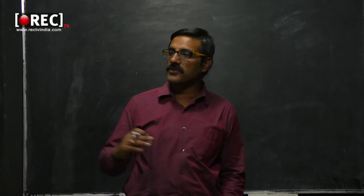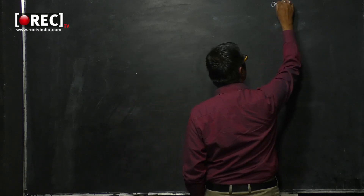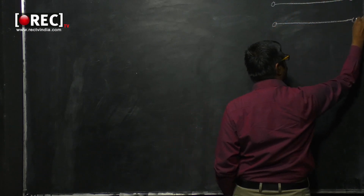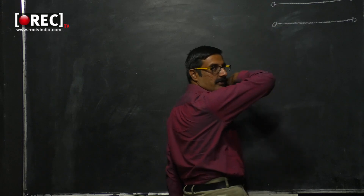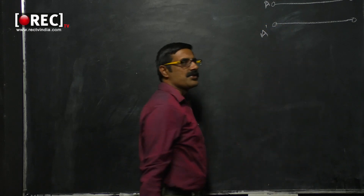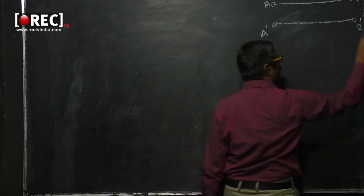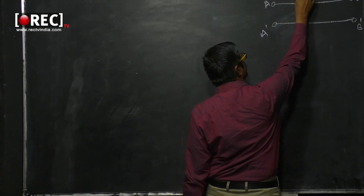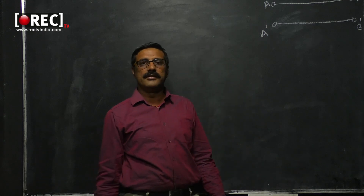Let us start the transmission line equations derivation. The schematic diagram of a transmission line will be like this. A transmission line can be viewed with this diagram — we have two terminals on the extreme left which are the input or source terminals, named AA'. The terminals AA' correspond to the input terminals of the TL and BB' correspond to the output terminals of the TL.